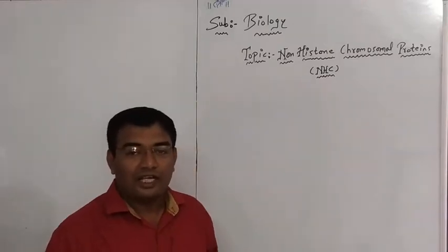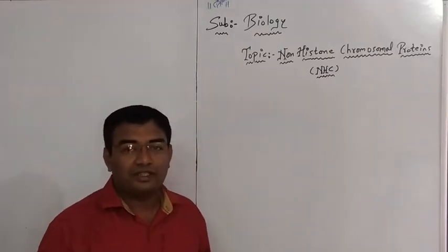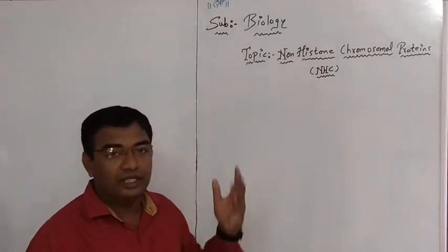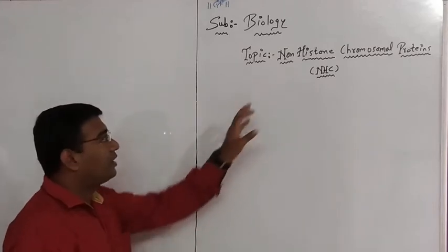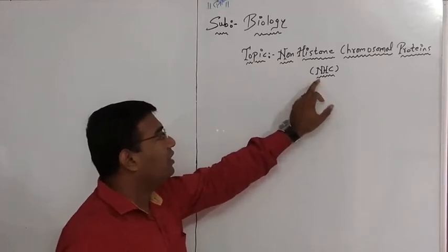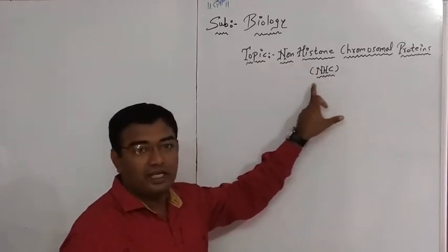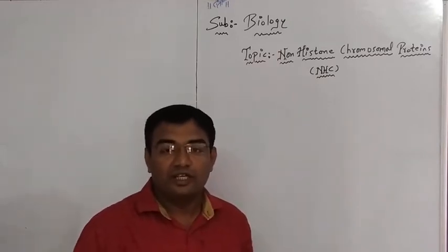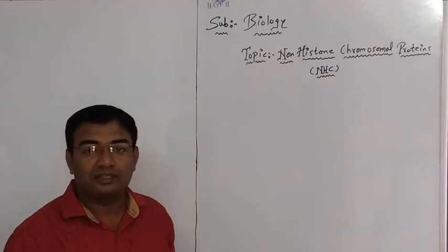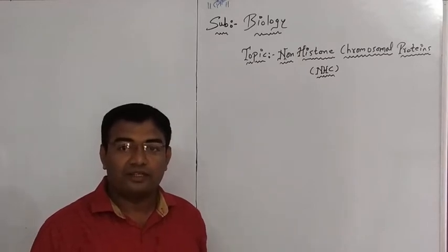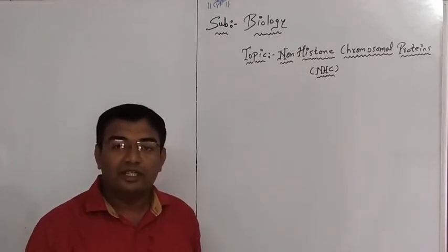Hello dear students. As we have already seen in my previous lecture about histone proteins and non-histone proteins, let us see a new video of biology with the topic non-histone chromosomal proteins, NHC. In my previous video you saw the histone proteins H2A, H2B, H3, H4, and H1 — together they form an octamer, and from the octamer we started developing the nucleosome.